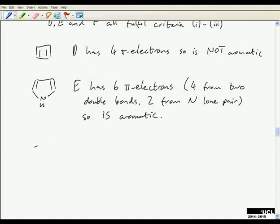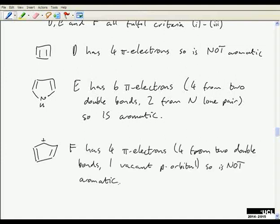Compound f only has 4 pi electrons, and again it's 4 from 2 double bonds and one vacant p orbital. 4 isn't a 4n+2 number, and so f is not aromatic.